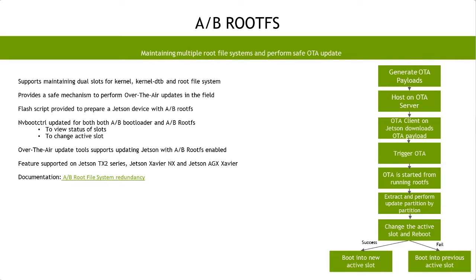When A/B root filesystem is enabled and OTA is triggered, the Jetson does not enter recovery mode — instead the OTA starts from the running root filesystem itself. The OTA payloads are extracted, the non-active slot is updated, then that slot is set as active and the device reboots into it. If the update was successful it boots into the new slot; if not, the system falls back to the previous active slot which was never modified. The A/B root filesystem feature is supported on Jetson TX2 series, Jetson Xavier NX, and Jetson AGX Xavier.